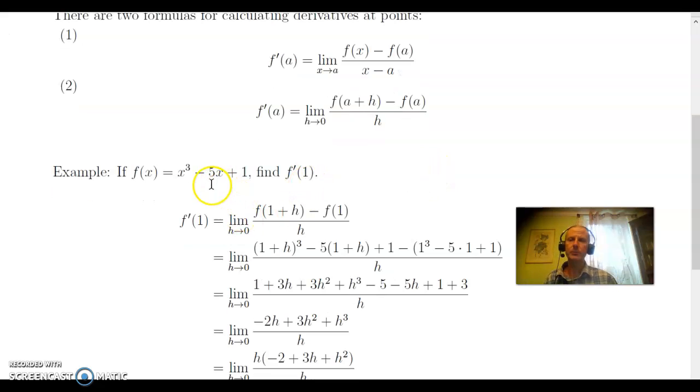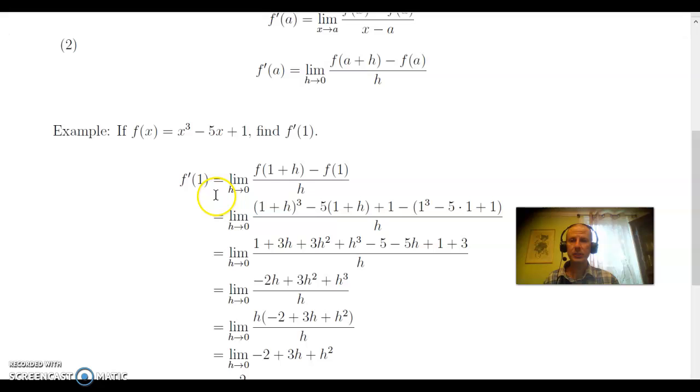Suppose f(x) is equal to x cubed minus 5x plus 1, and we want to find f prime of 1. Well, by definition, f prime of 1, by this definition here where we're just letting a be 1, we get that f prime of 1 is the limit as h goes to 0 of f(1 + h) minus f(1) all over h.